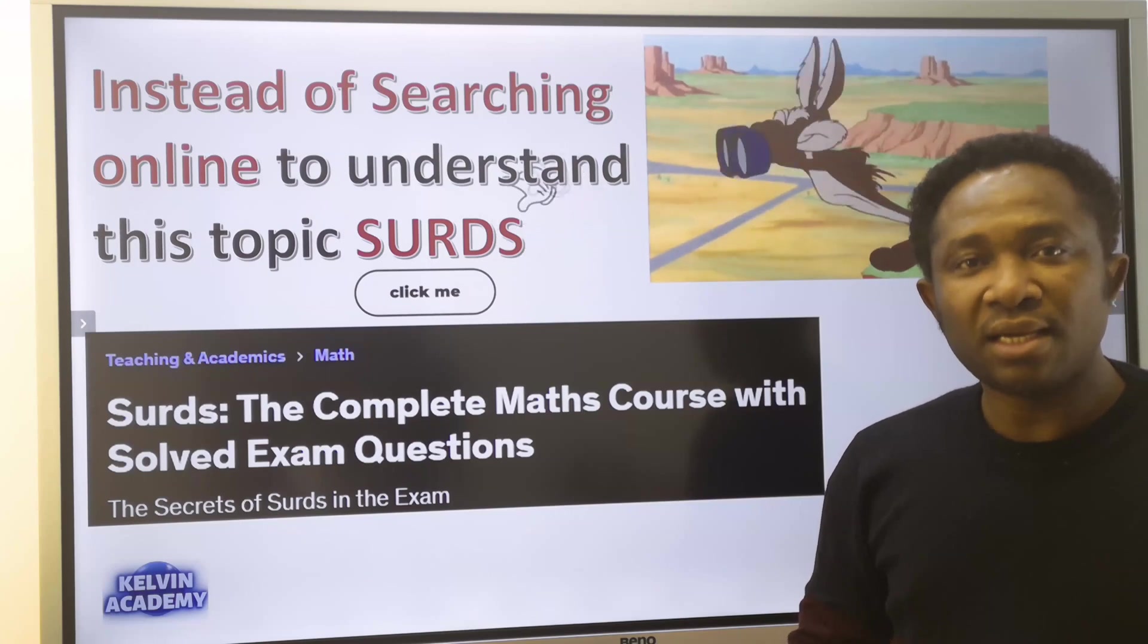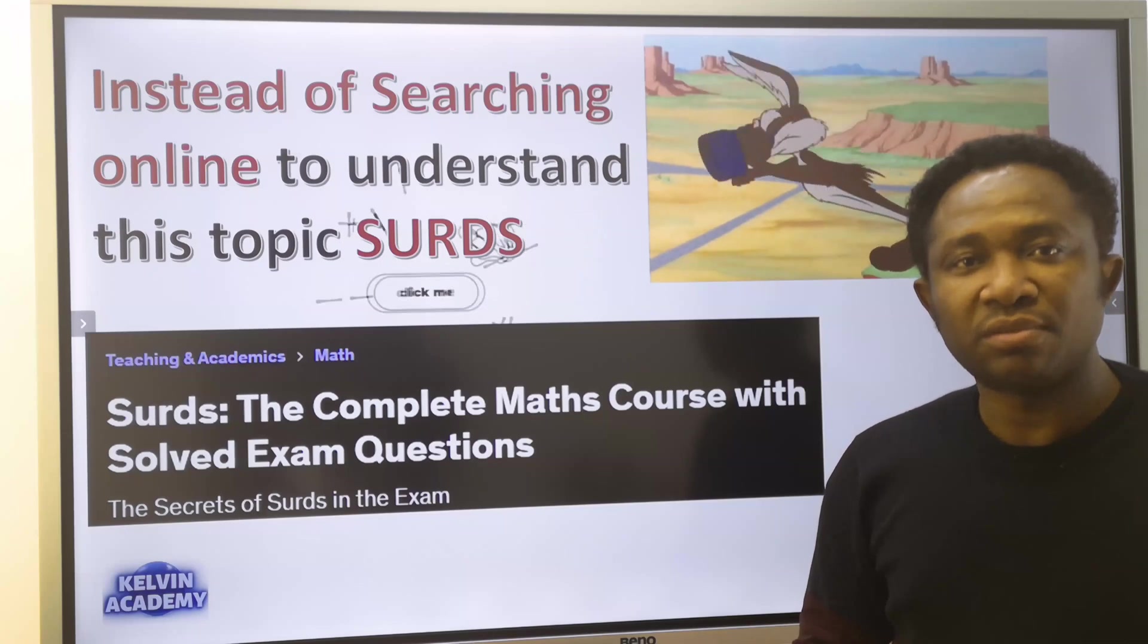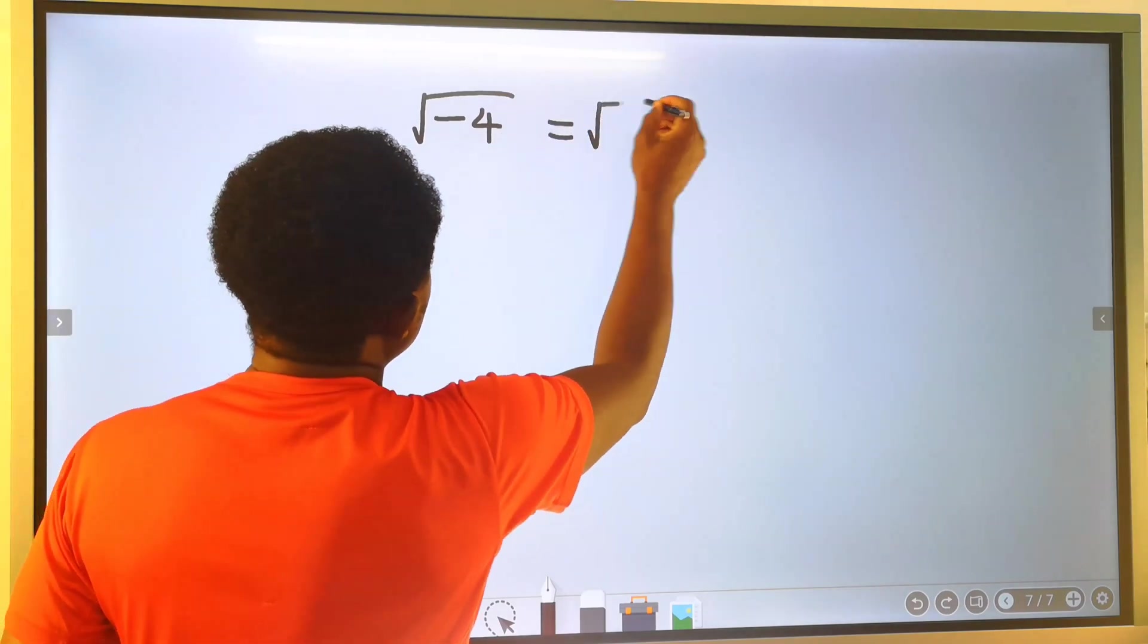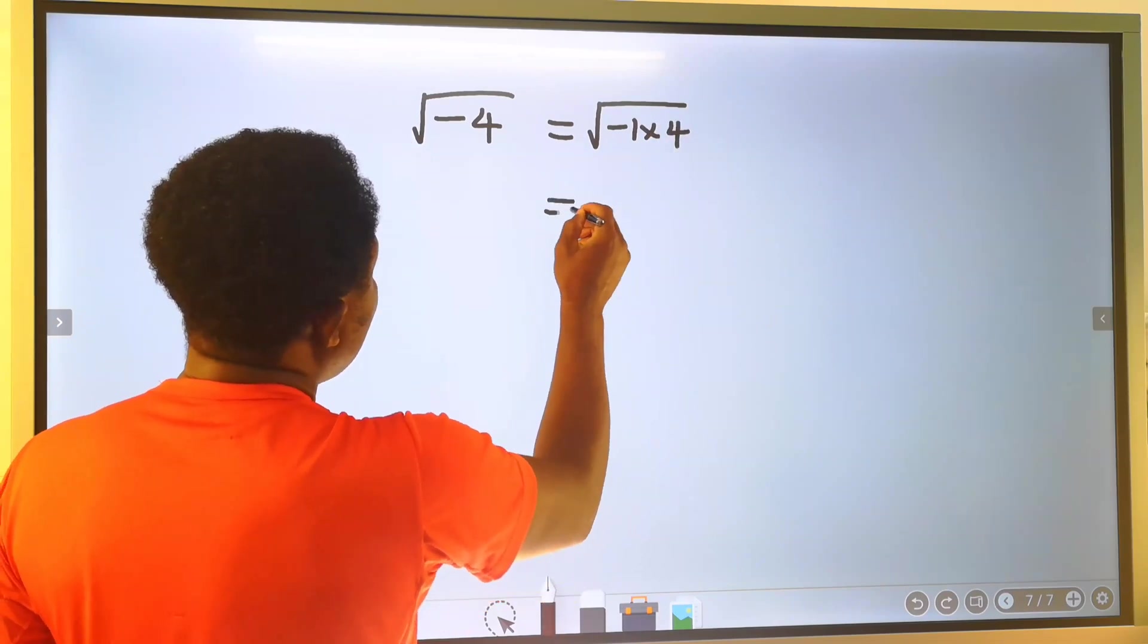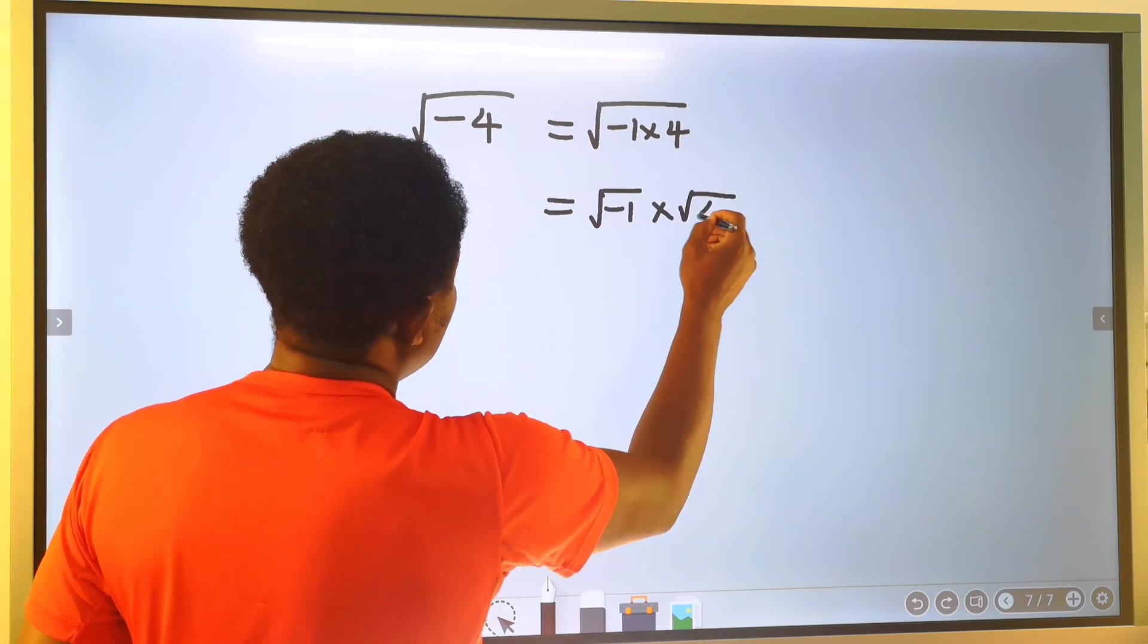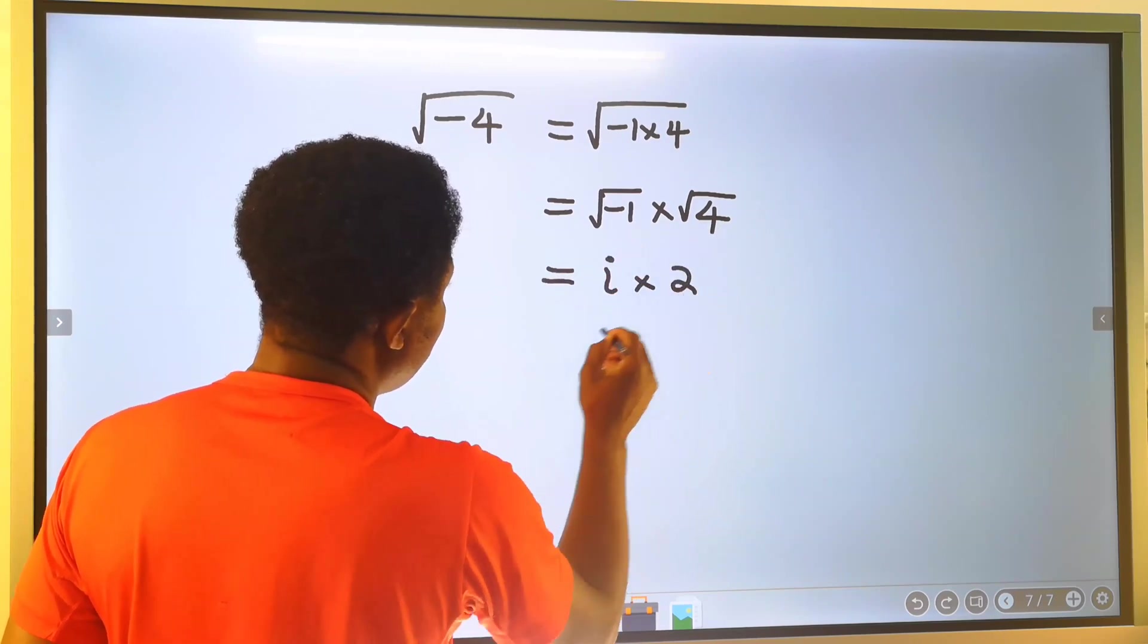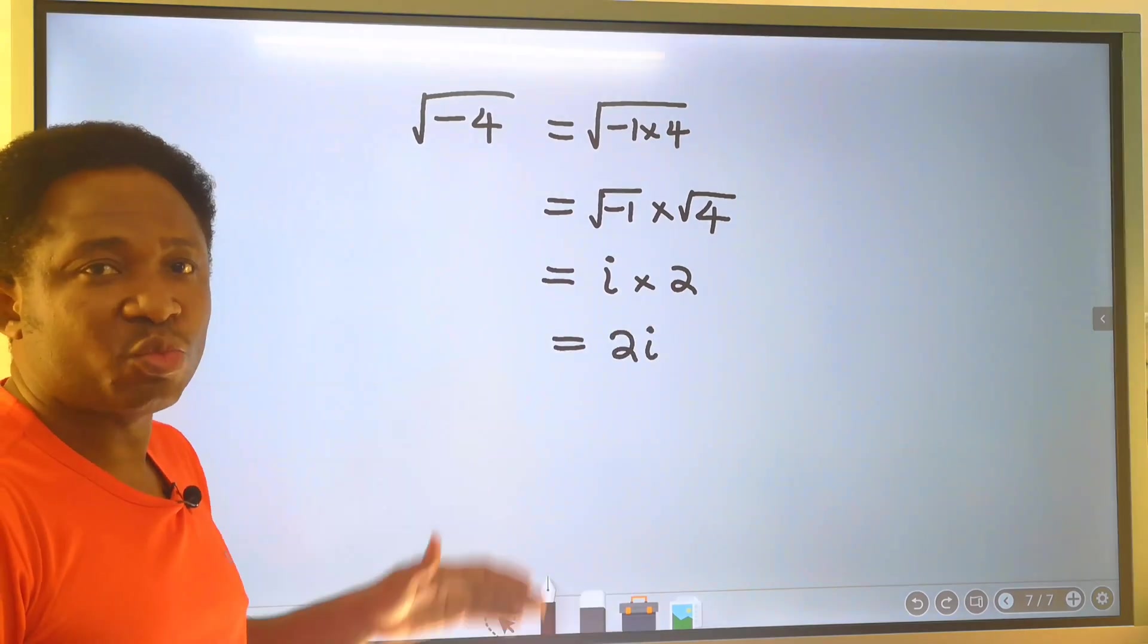The square root of minus four is the same thing as saying minus one times four. We can write this as the square root of minus one times the square root of four. This is i times two, and here we have 2i. This is when we are dealing with complex numbers.